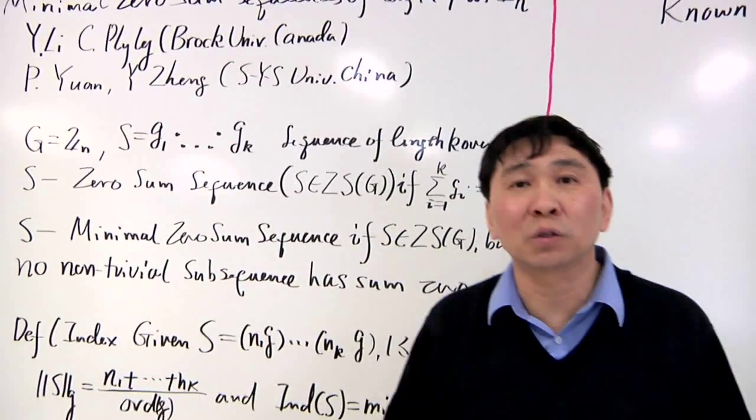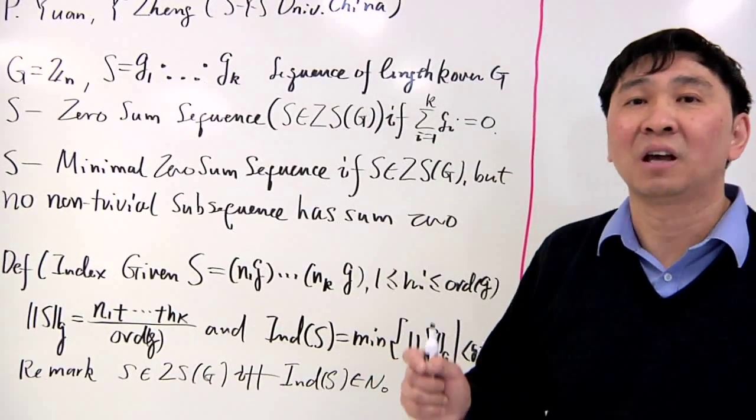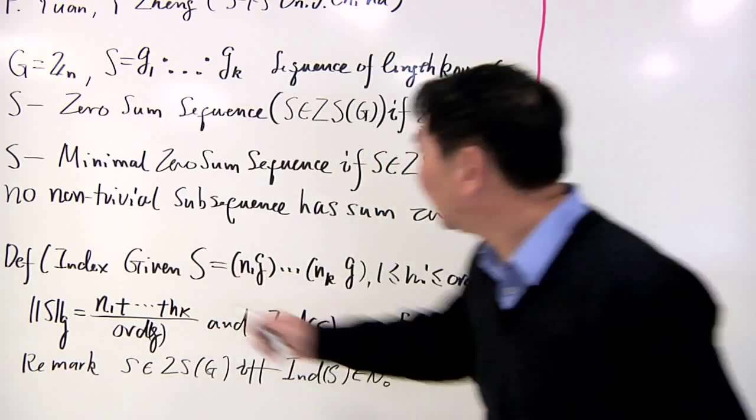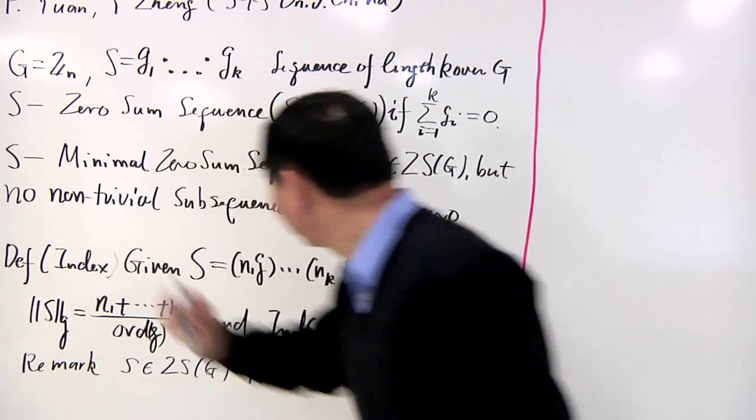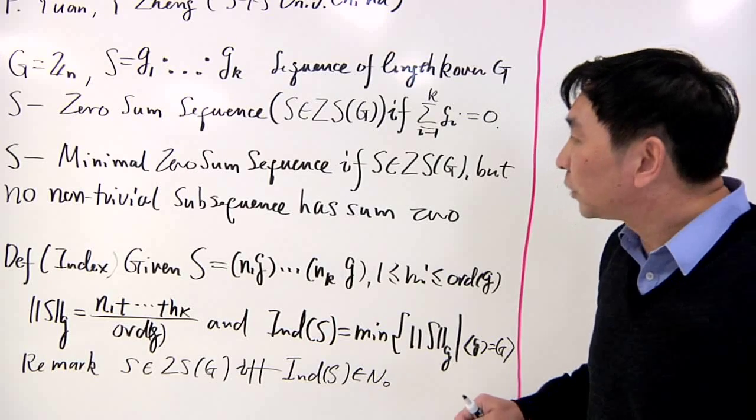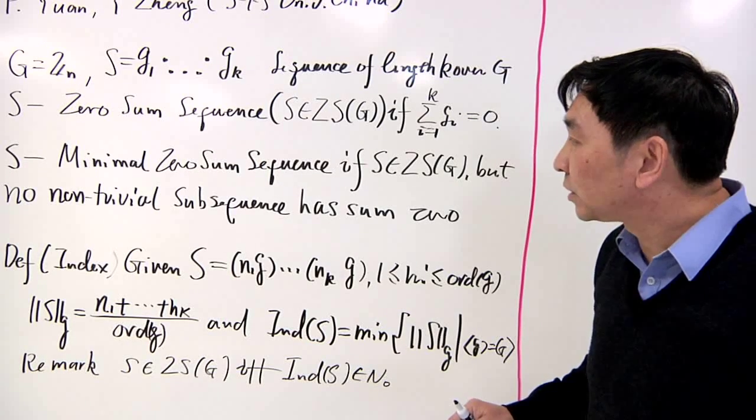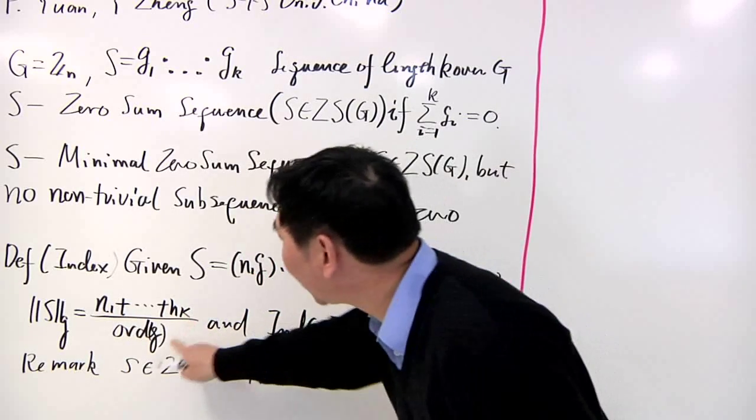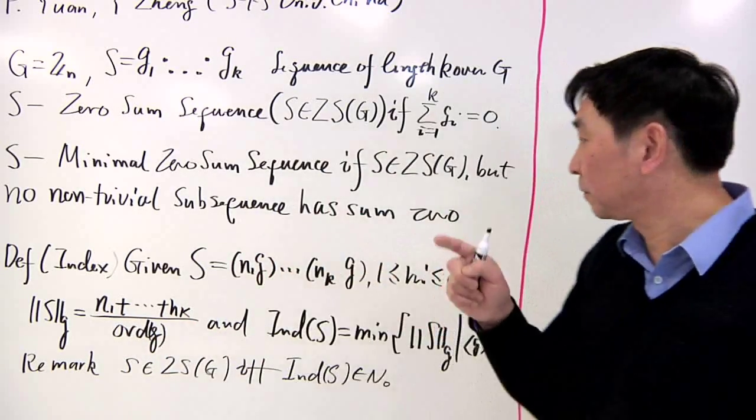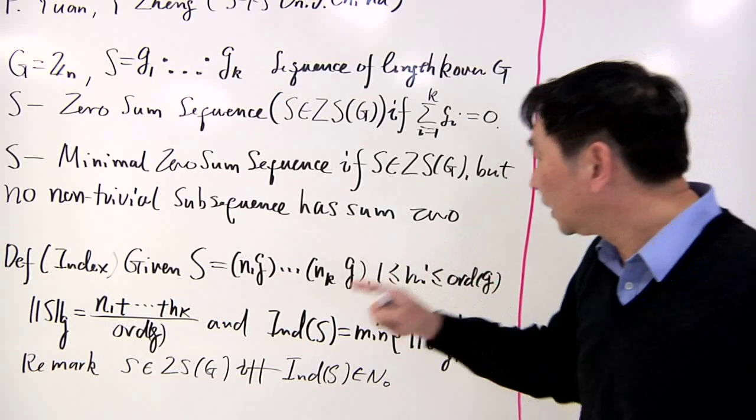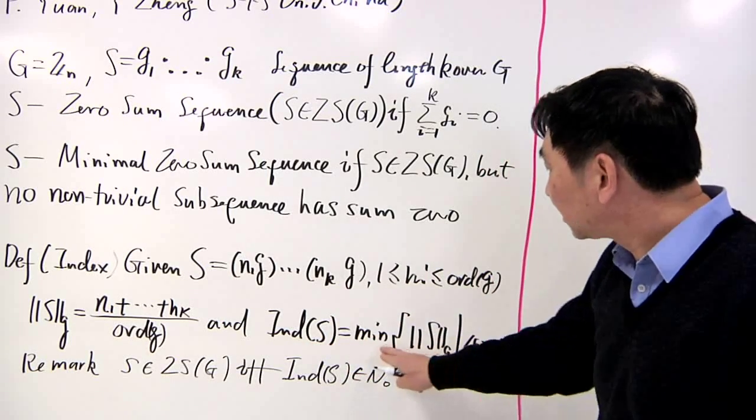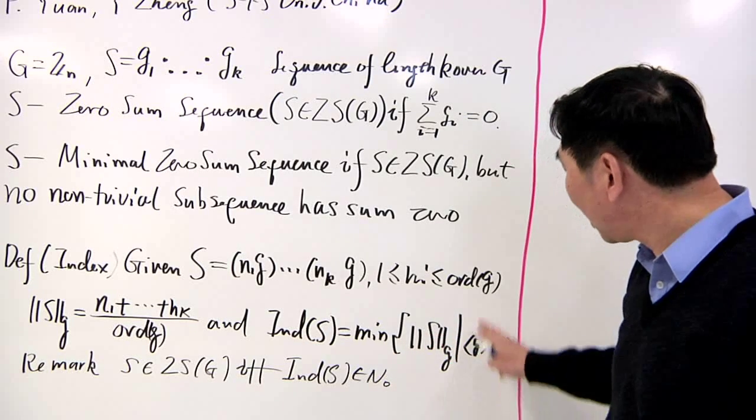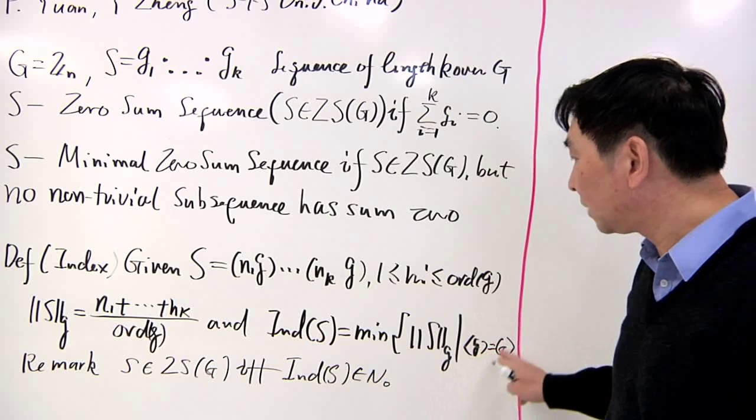Now I'm going to introduce the index of the sequence. Given any sequence, first we define the norm of the sequence to be the sum of the coefficients divided by the order of g. The index of s is the minimal of all these norms when g runs through all the generating elements.